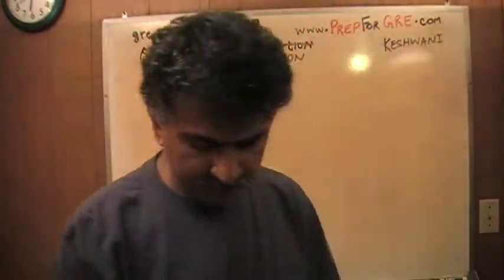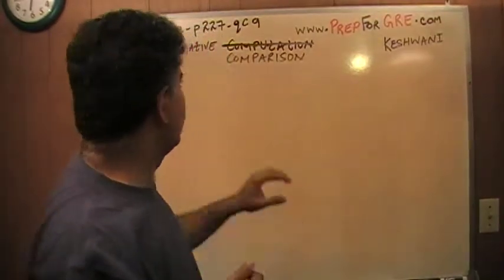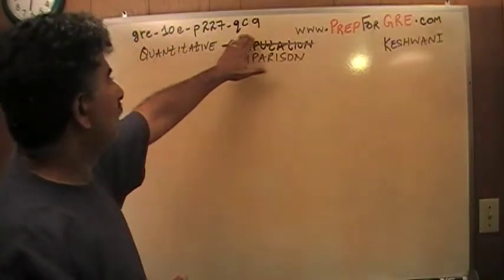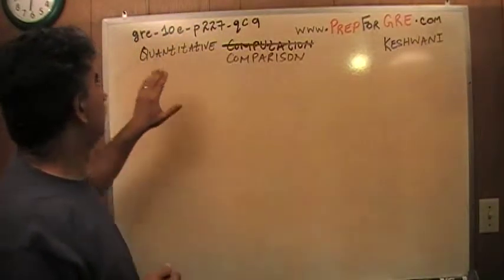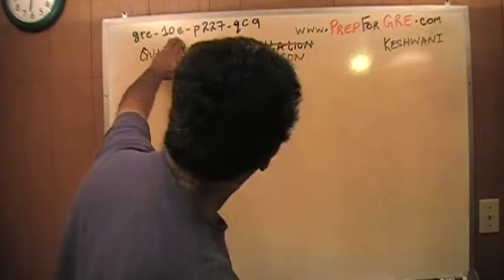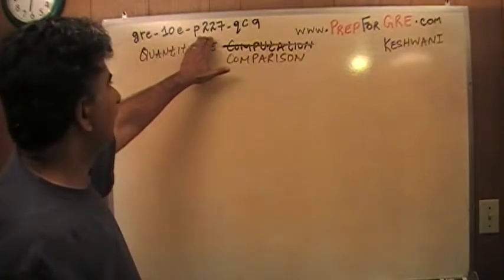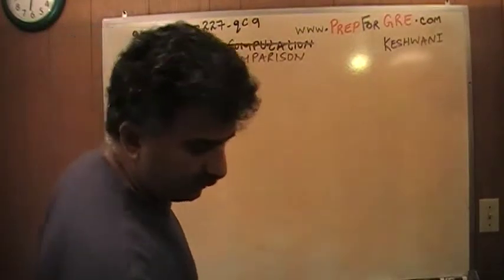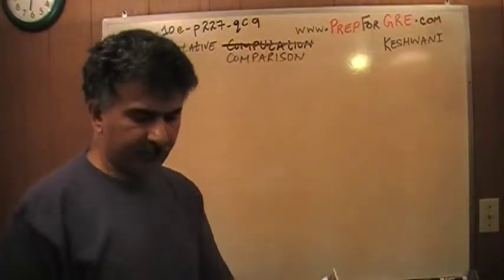The problem that I'm about to solve is the one that you're going to find on page number 227, quantitative comparison question number 9. GRE-10E for the 10th edition of the book. Then the page number, dash QC for quantitative comparison, number 9. Let's take a look at it.